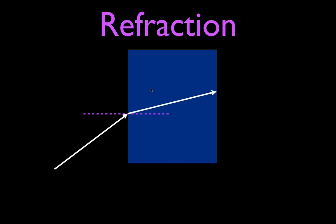The glass has a higher index of refraction, so the light is going to bend towards the normal line until it strikes the other boundary. Now it's going to enter a material with a lower index of refraction. Draw the normal line and bend it away from the normal line. This is my angle of incidence and this is my angle of refraction.